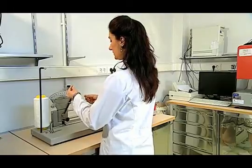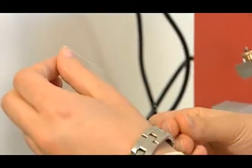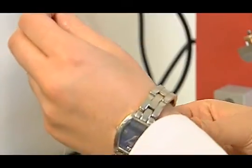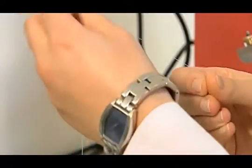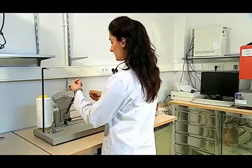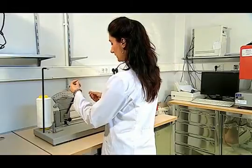Tek katlı ipliğimizin öncelikle büküm yönünü tayin ediyoruz. Bunun için yaklaşık olarak 10 cm iplikten sarkıtarak büküm yönü tayini yapılır ve bükümün sağ yönlümü, sol yönlümü olduğuna karar verilir.